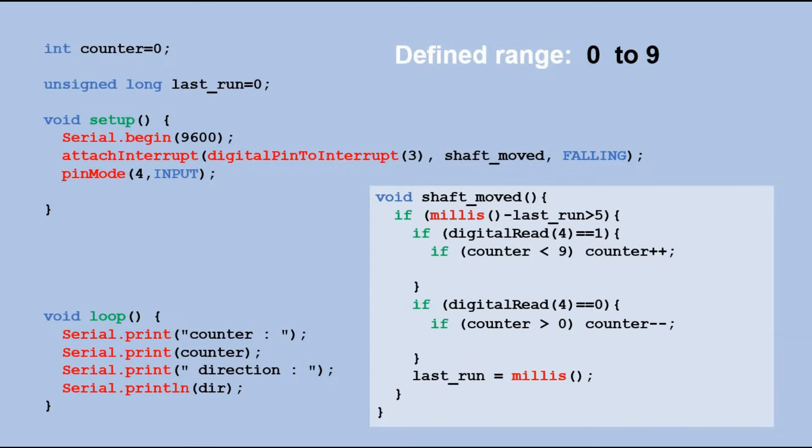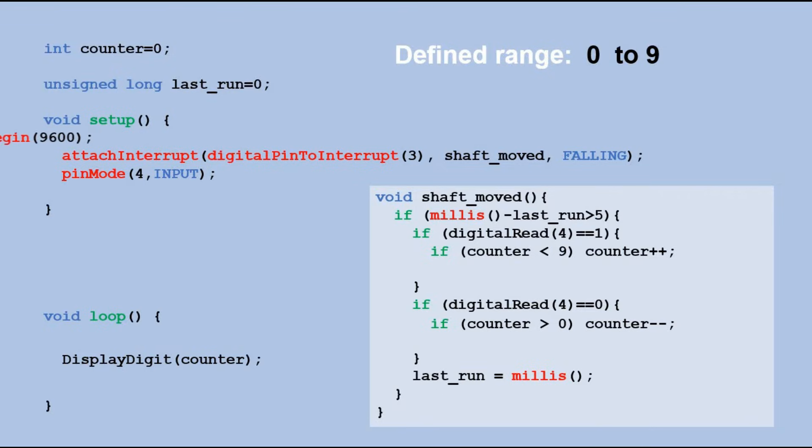We'll not output anything to the serial monitor so let's get rid of print commands in the loop function. We would call the display digit function instead to display the current counter value. Since we are not using serial monitor we do not need to open serial port. We are nearly done.